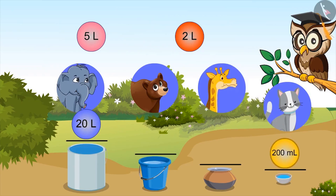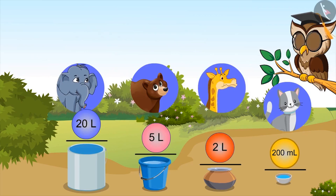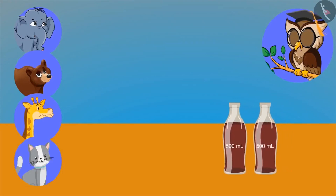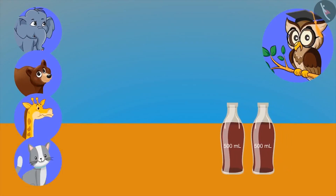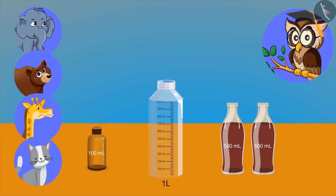Right, now you all have got it. The capacity of a bucket is 5 liters and the capacity of the utensil is 2 liters. Very good, kids. Please show some more examples. Look, I have two bottles of cold drink and these empty bottles of 1 liter and 100 ml. Now try to pour this cold drink into the empty bottle.